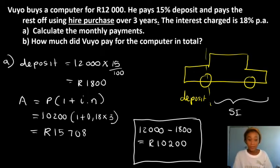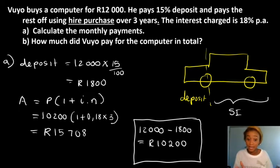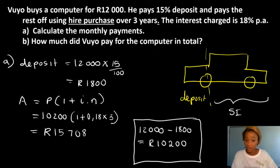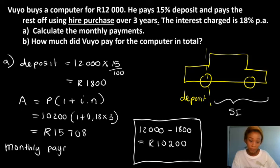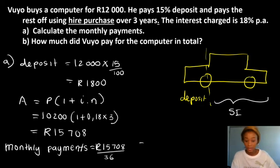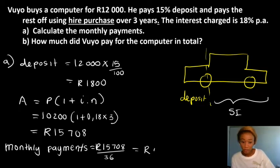From here, we are not paying this loan all at once as a lump sum, but in monthly payments. They're giving him three years, so that's 36 months. The monthly payments will be the final loan amount of 15,708 divided by 36, and the answer is 436.33 rands per month.